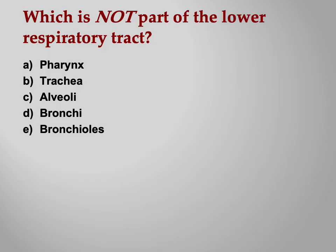Which is not part of the lower respiratory tract — pharynx, trachea, alveoli, bronchi, or bronchioles? The answer is the pharynx: the pharynx is upper respiratory tract. All the others are lower respiratory tract.